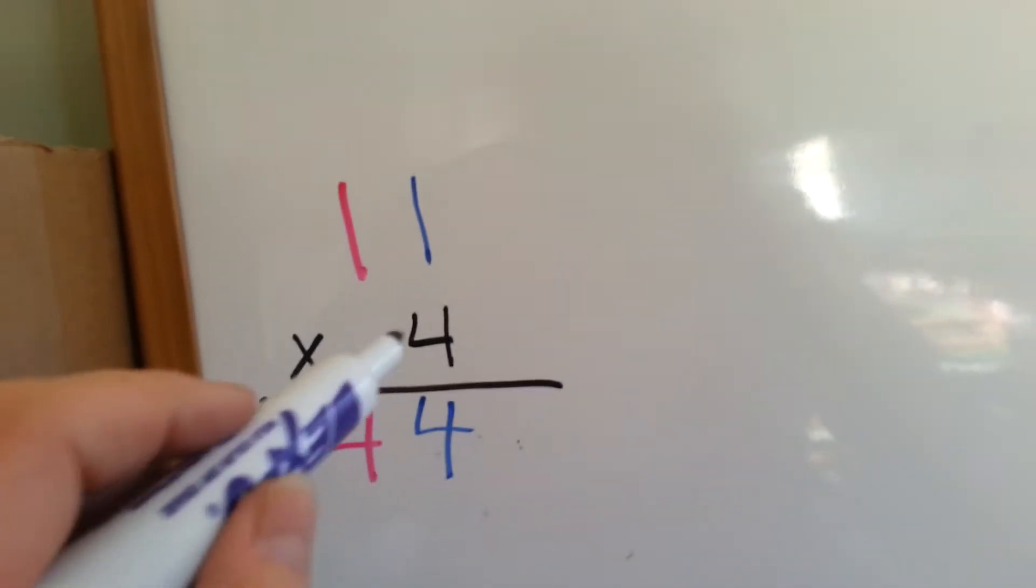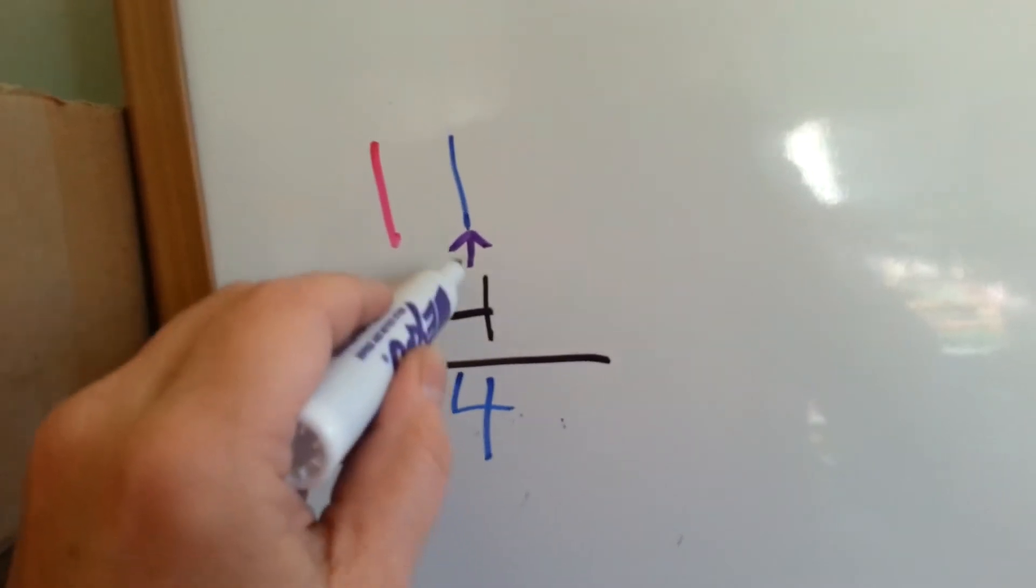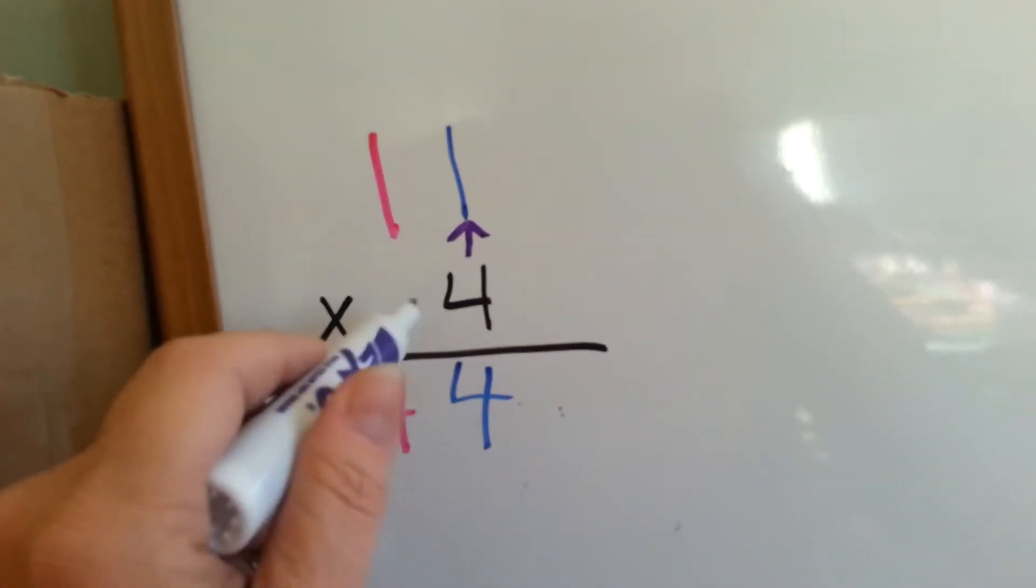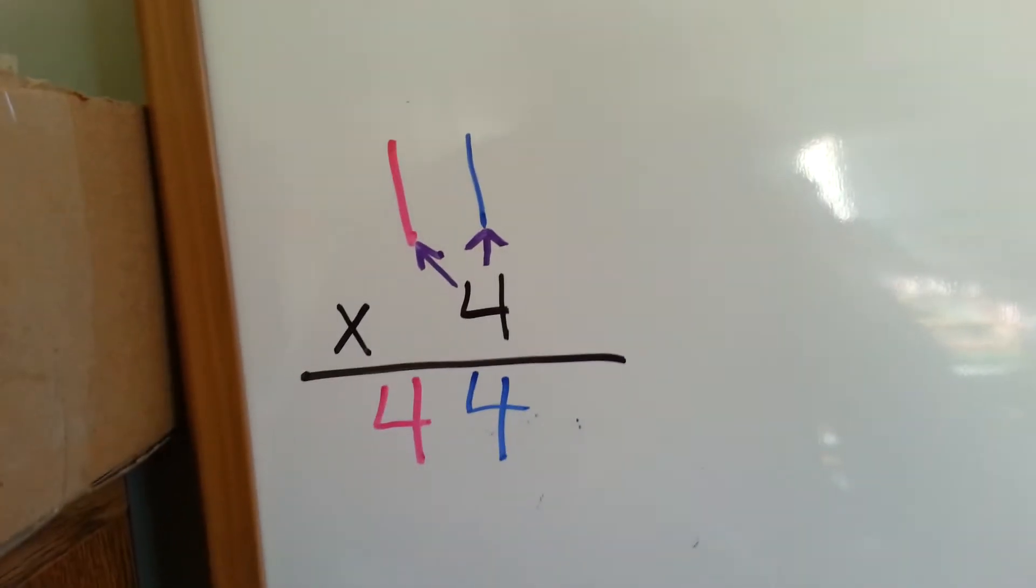Same thing if we go this way. We go up here and multiply 4 times 1, and we put our 4, and then we come over here and multiply 4 times 1 this way, and put our answer there.